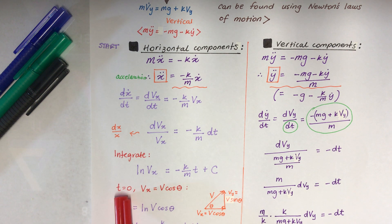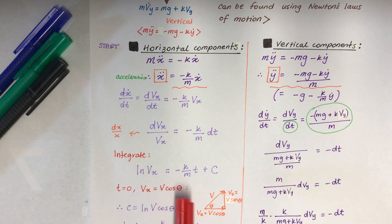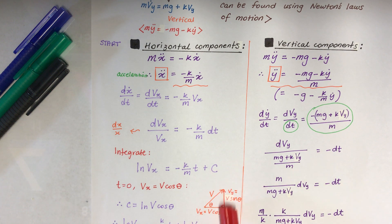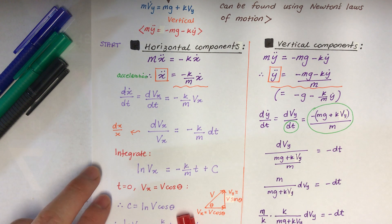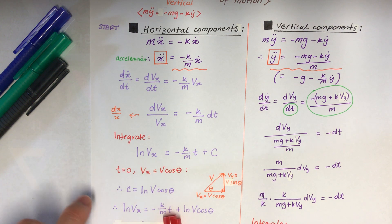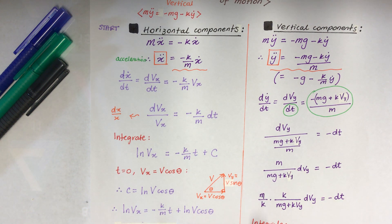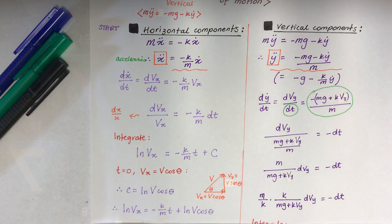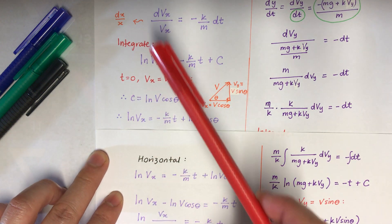The initial t equals 0, but the initial horizontal velocity vx is not zero because this is projectile motion with an angle. So we use trigonometry — v cos theta for vx. Therefore the constant is ln(v cos theta), and putting it all back in: ln vx equals minus k over m times t plus ln(v cos theta). Now this side is the vertical — just leave that for now and focus on the horizontal part.